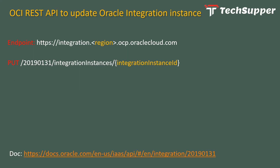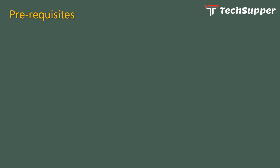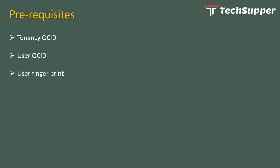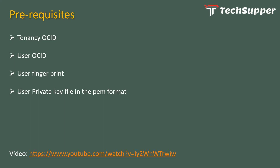If you want to look at the complete documentation for this REST API, you can go to the link shown. The prerequisites to complete this demo are: you must have the tenancy OCID, the user OCID, the fingerprint, and the user private key file. If you don't know how to fetch these, I have created another video you can refer to — I won't describe each item here but will show you how to use that endpoint to update the instance.